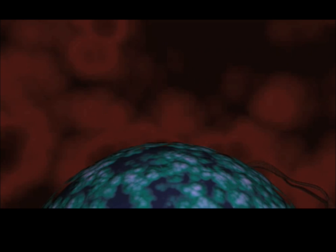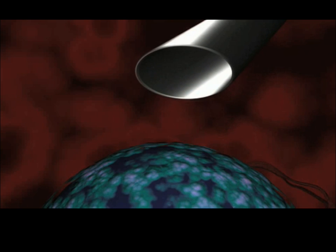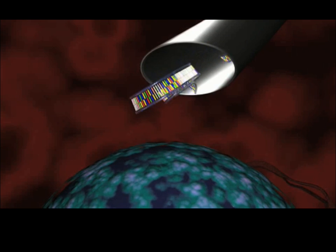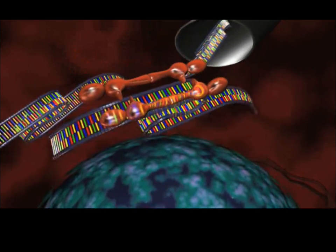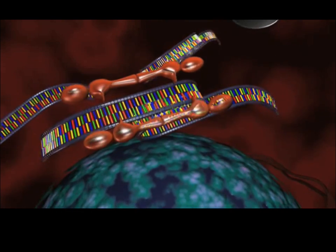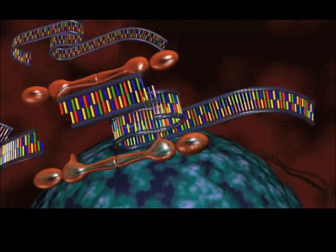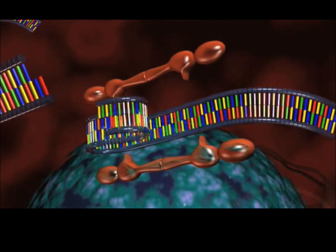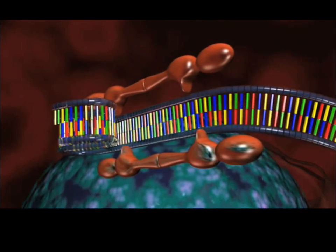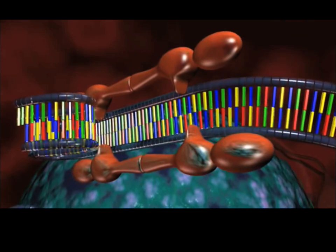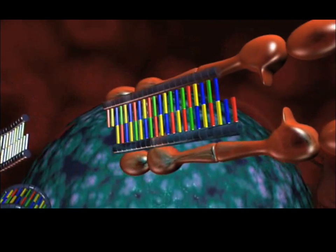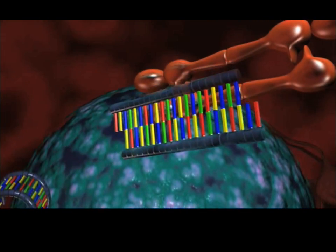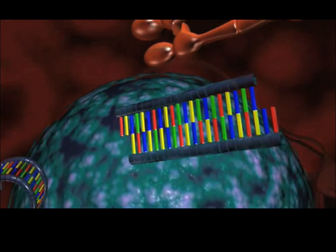When long double-stranded RNAs enter a cell, they are recognized and cleaved by DICER, which is a member of the RNase III family of double-stranded RNA-specific endonucleases. Cleavage by DICER creates short double-stranded RNAs characterized by two nucleotide-long three-prime overhangs. These are called small interfering RNAs, or siRNAs.